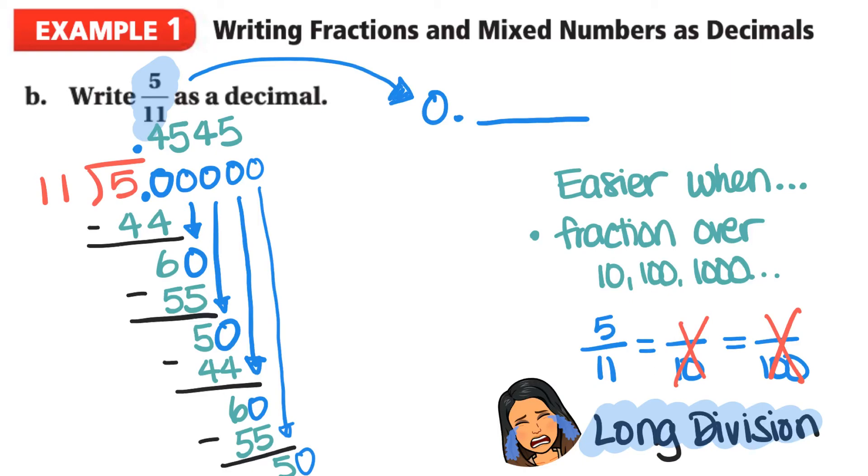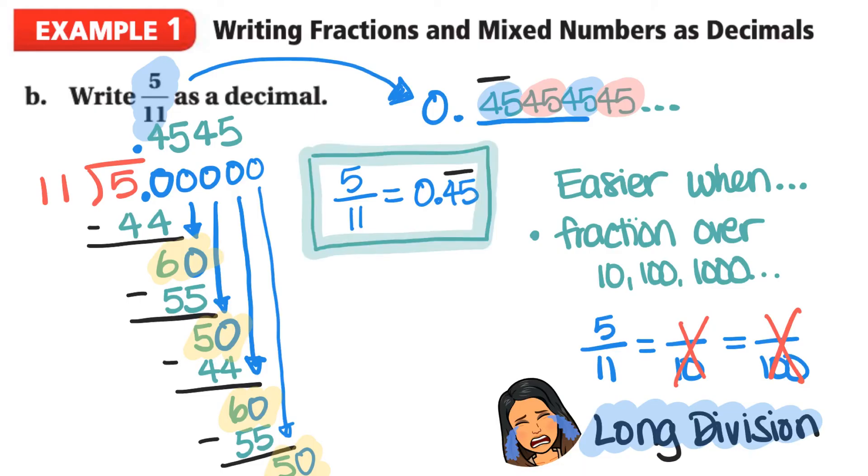So do we notice that every time we do the subtraction, we're getting 60, then 50, then 60, then 50. And that's repeating. So this is going to tell us that this decimal number is going to continue on and on and on and on forever. It's going to be 0.45454545 blah blah blah blah blah blah. So what's the part that's repeating? Well, the 45 is being repeated. Now, we don't want to write 0.45454545 forever because that would be silly. So what we do is we draw a bar over the part that is repeating. So the part that's repeating is the 45. So we draw the bar on top of the 45. And we get 5 over 11 is equal to 0.45 with the bar over top of the 45. And of course, this one is a repeating decimal.